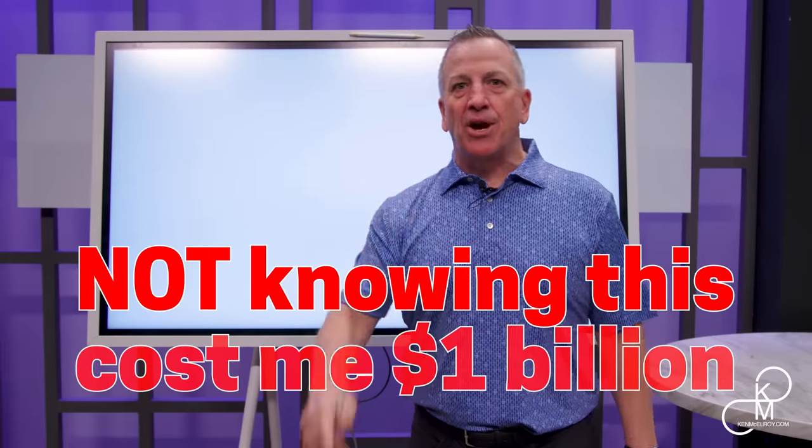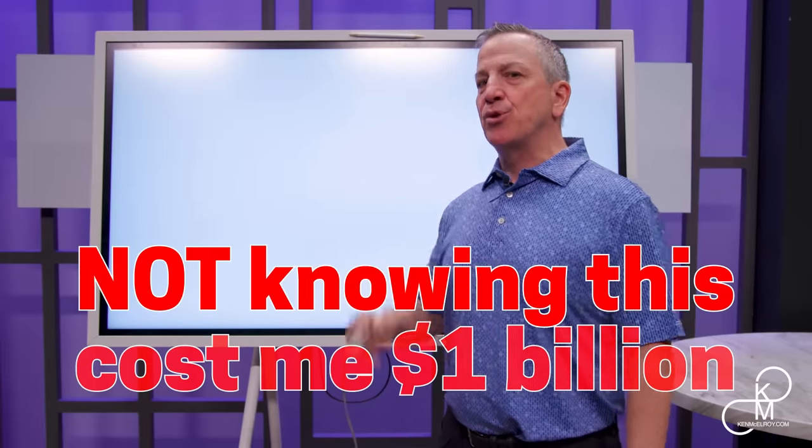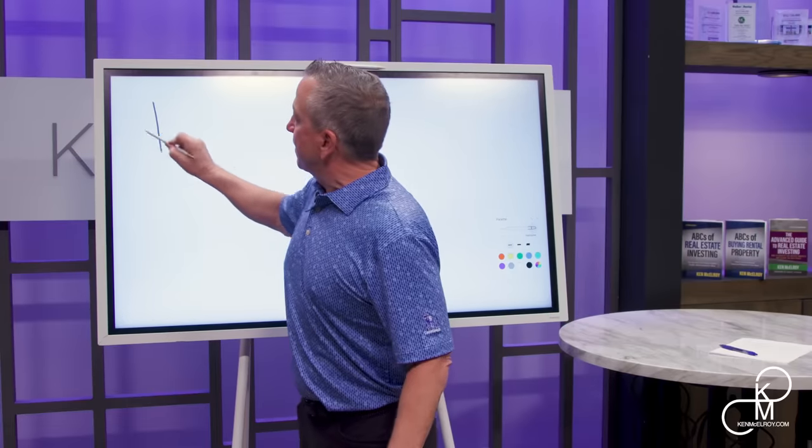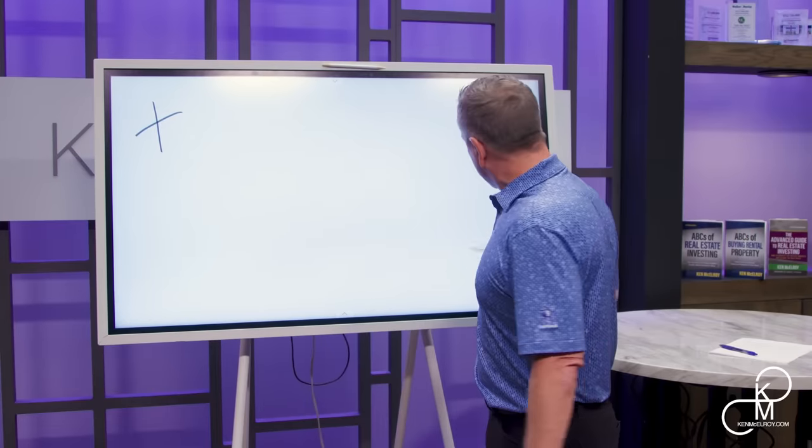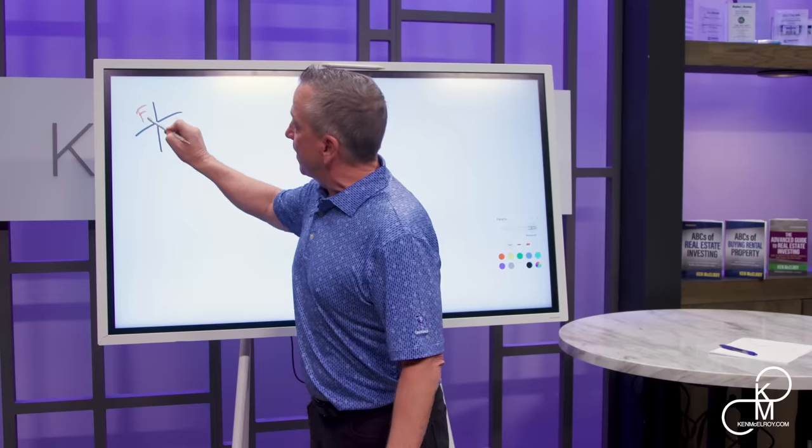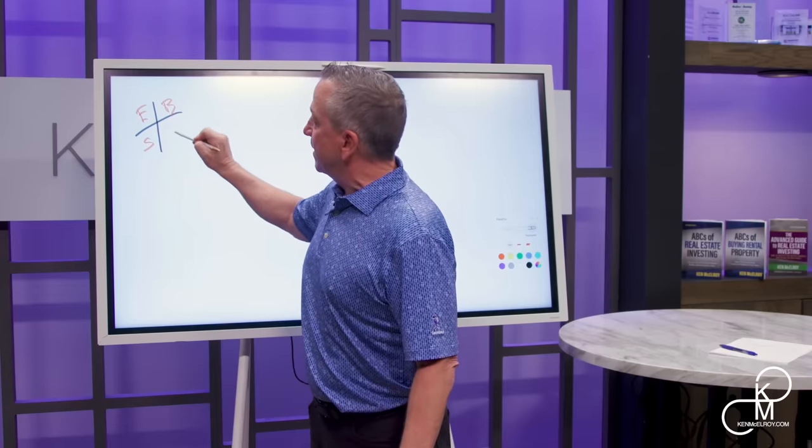Not knowing this cost me $1 billion. Now I'm going to share with you the truth about how money works. So some of you might have seen the cash flow quadrant from Rich Dad, but essentially you've got E, S, B, and I.